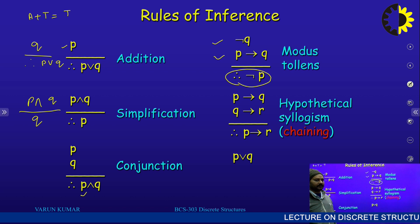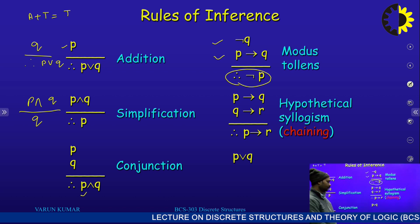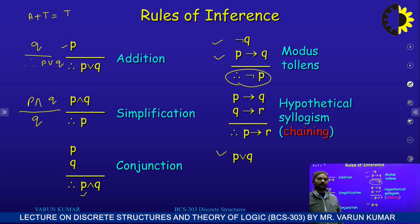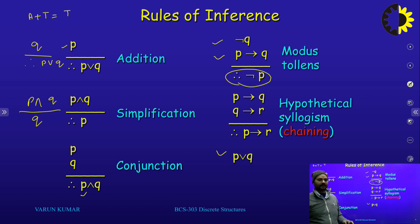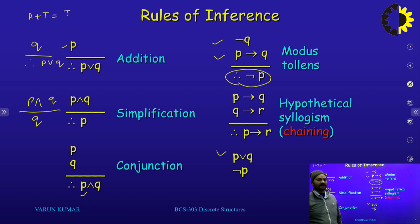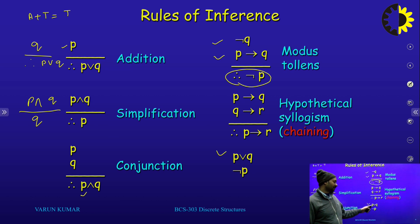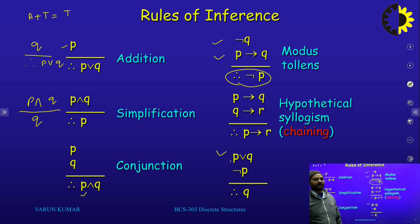If p disjunction with q is true — meaning either p is true or q is true — and my second statement is negation of p, meaning p is always false, then if p disjunction with q is true and p is not true, it means q is true. So my conclusion is q is always true. This is disjunctive syllogism.